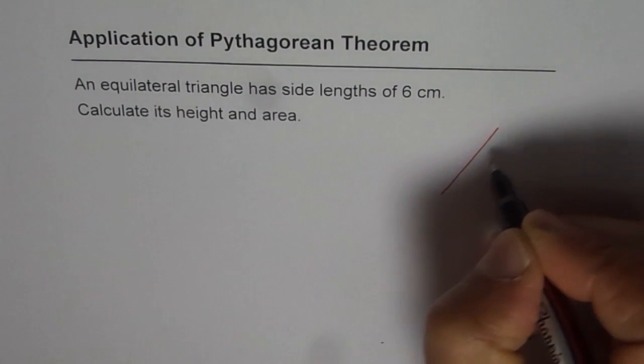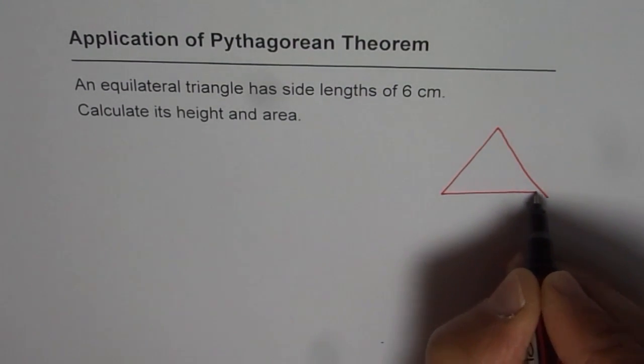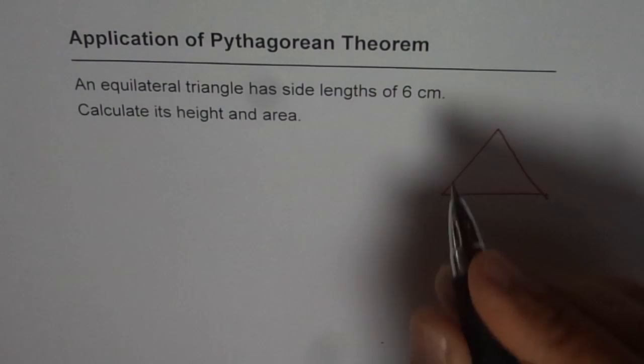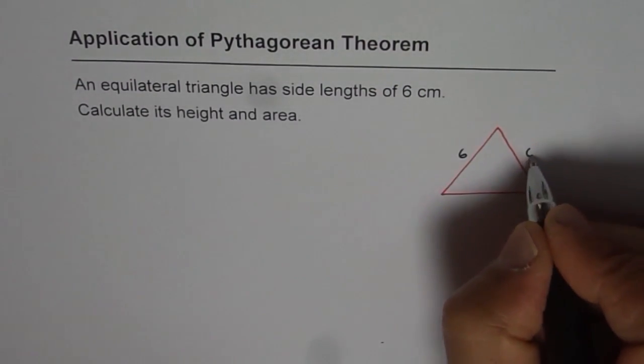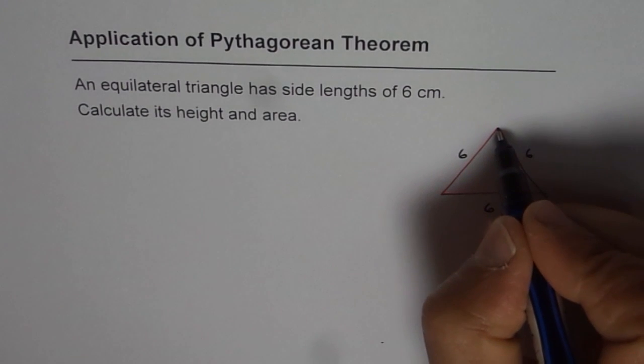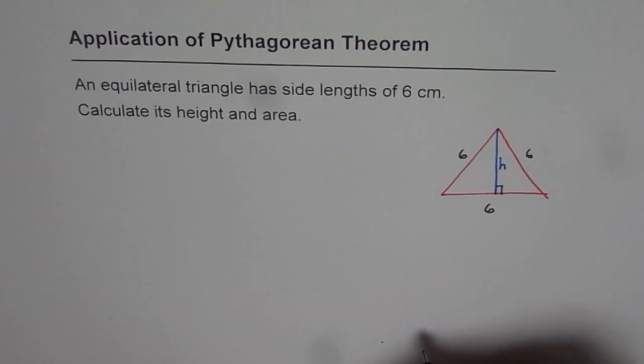Let me first sketch one. Let us say this is our equilateral triangle. And what we are given here is that each side is 6 cm. What we need to find is height of this triangle. That is, if I drop a perpendicular from here, that becomes the height. So let us say this is the height h.